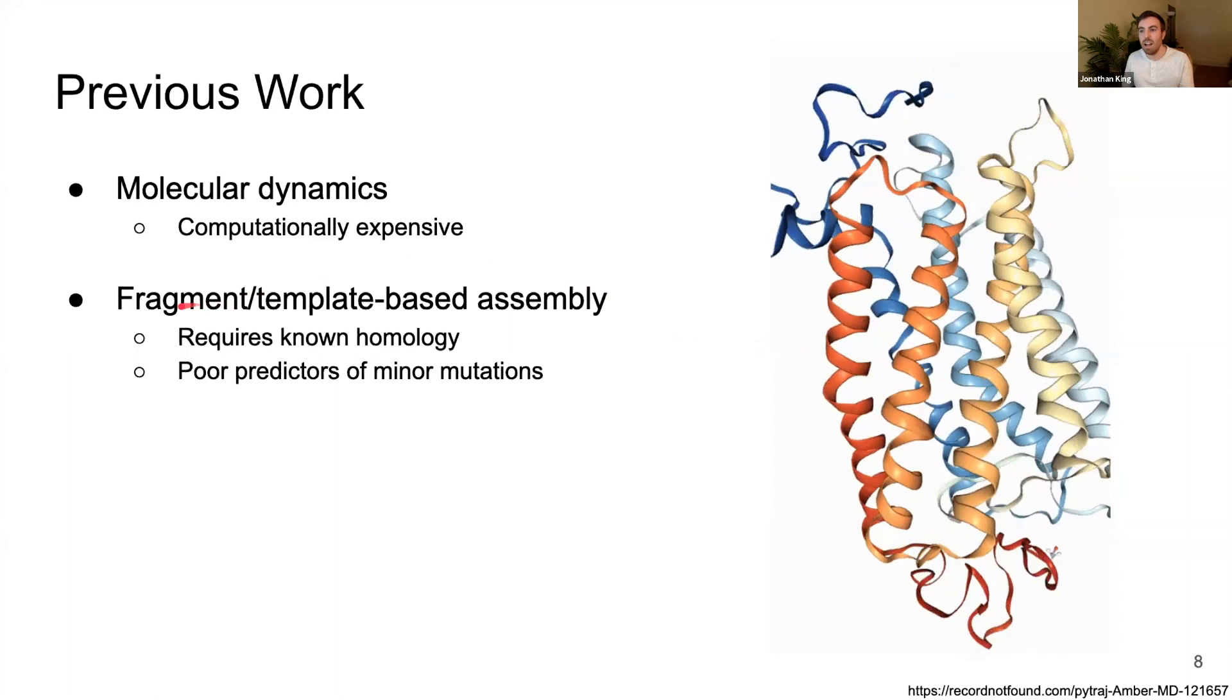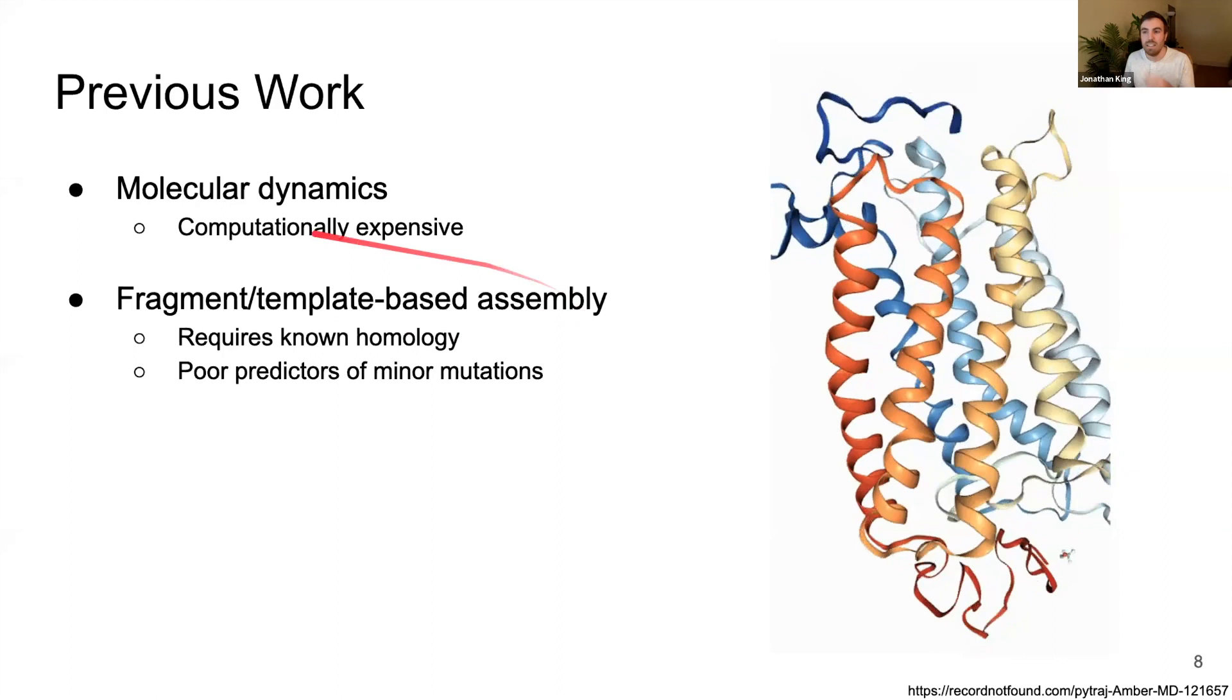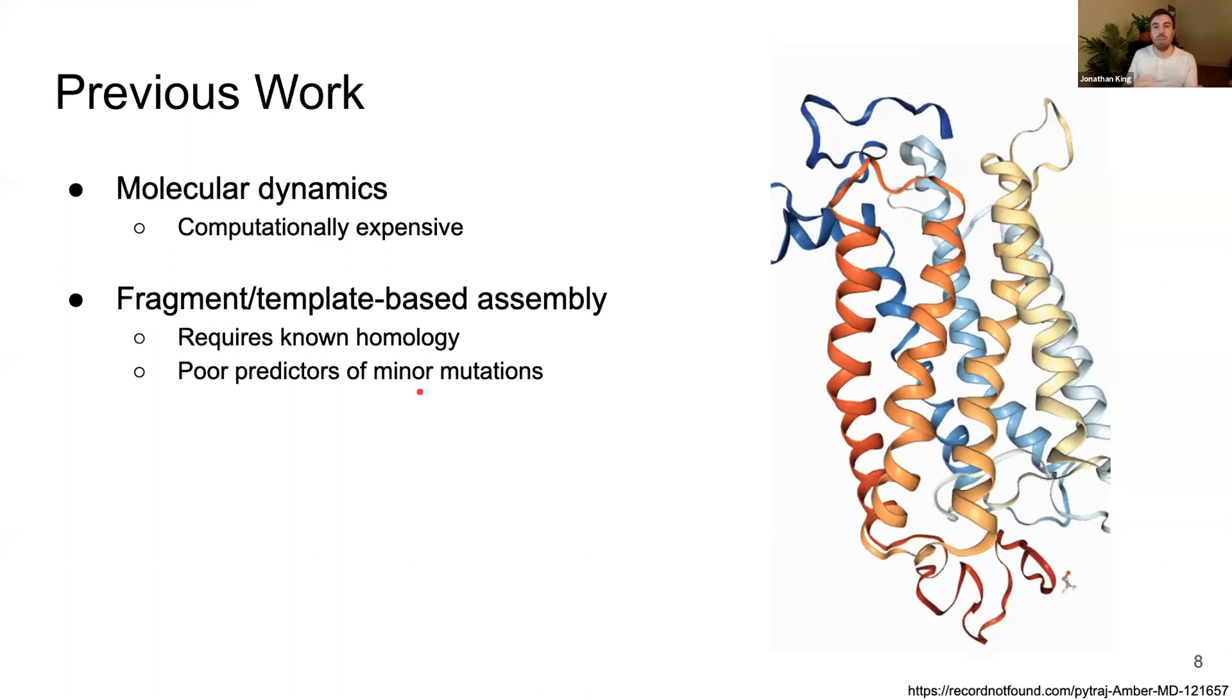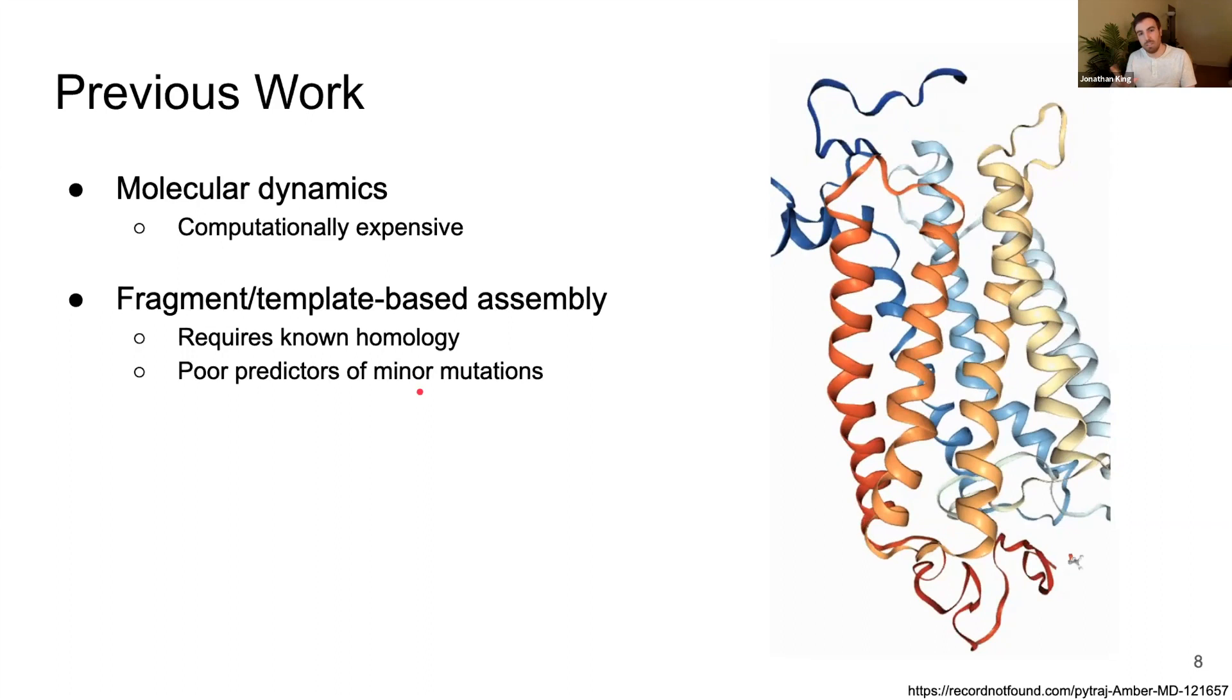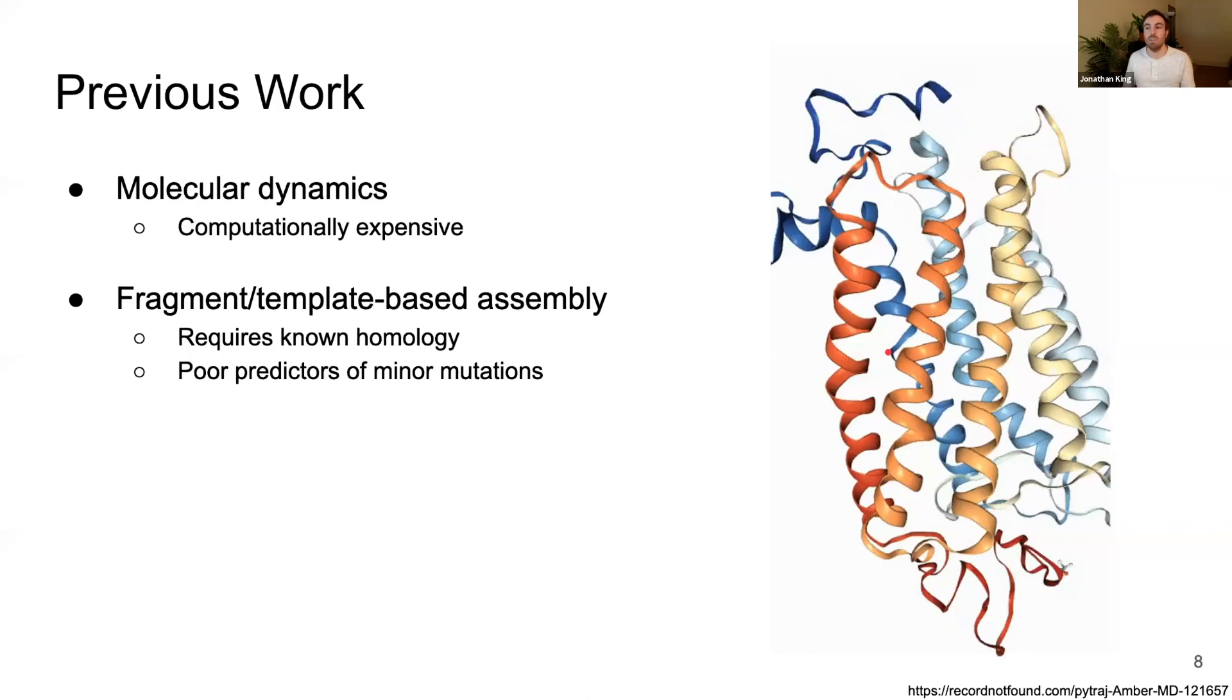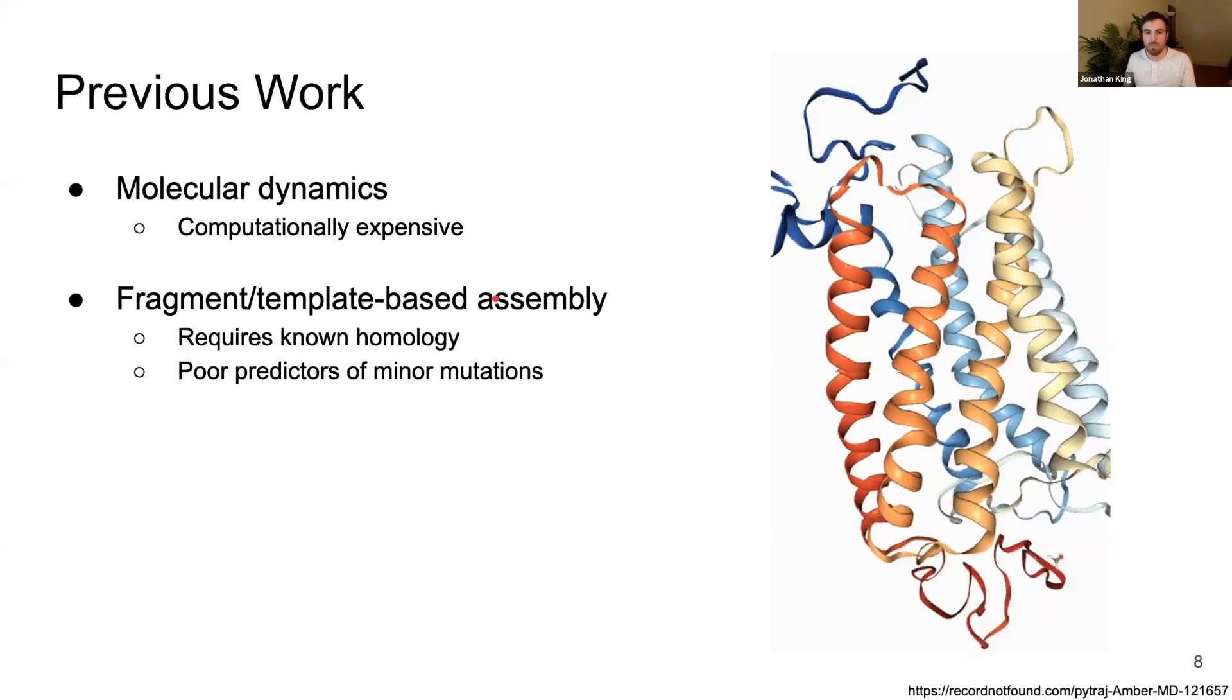Another set of methods are called fragment or template based assembly. In these methods, you say, well, I don't know what this protein looks like, but I know what a lot of its similar proteins do look like. So you can try to compare it with ones that you know that are similar, but if there's any small difference between them, your prediction might be wrong because all it takes is a single mutation on the protein for it to completely unfold. So these methods in particular are found to encounter problems.